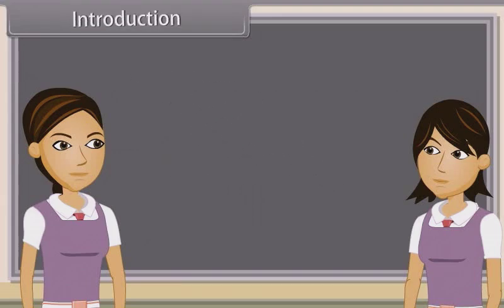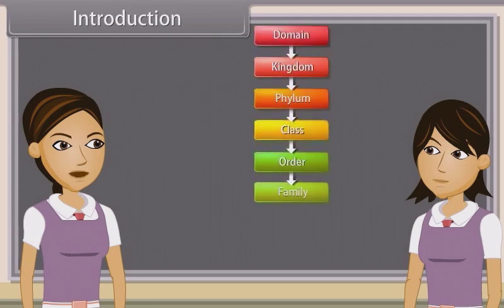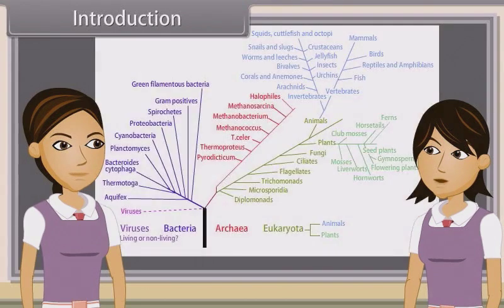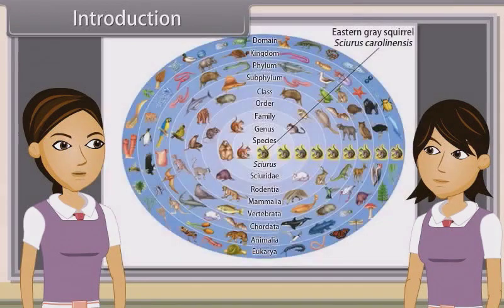Biological classification, or scientific classification in biology, is a method by which biologists group and categorize organisms by biological type, such as genus or species. Modern biological classification has its roots in the work of Carolus Linnaeus, who grouped species according to shared physical characteristics. These groupings have since been revised to improve consistency with the Darwinian principle of common descent.